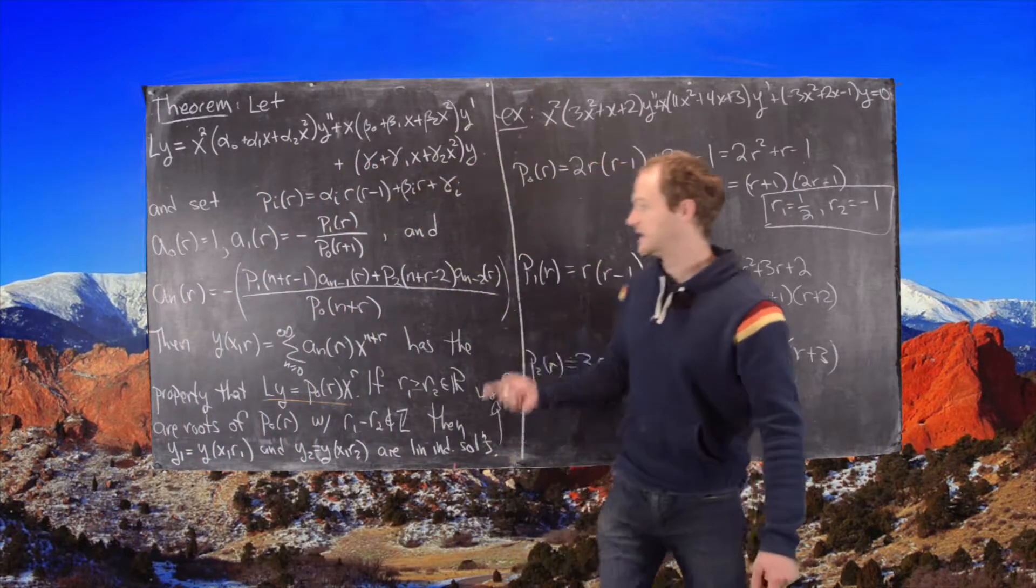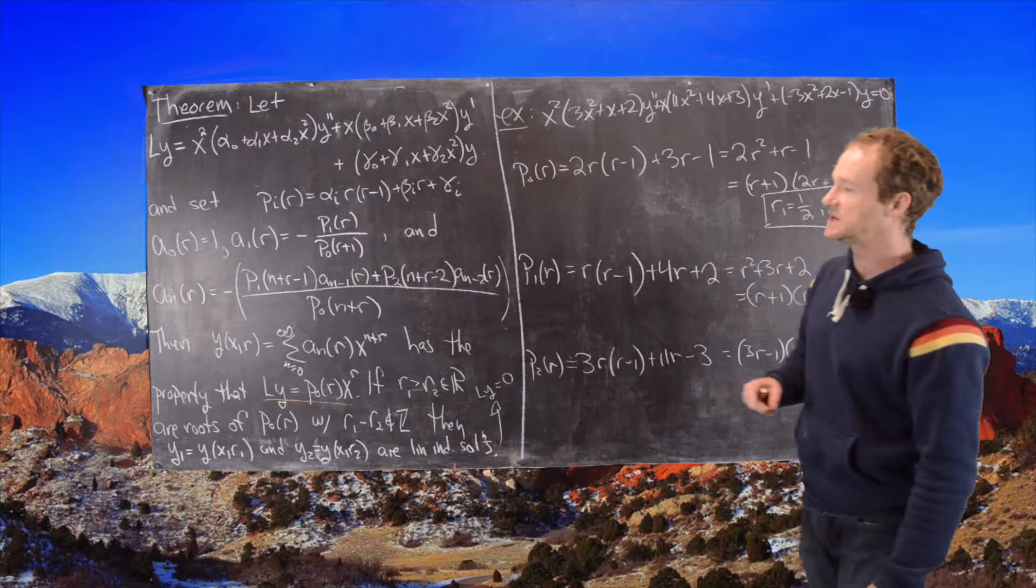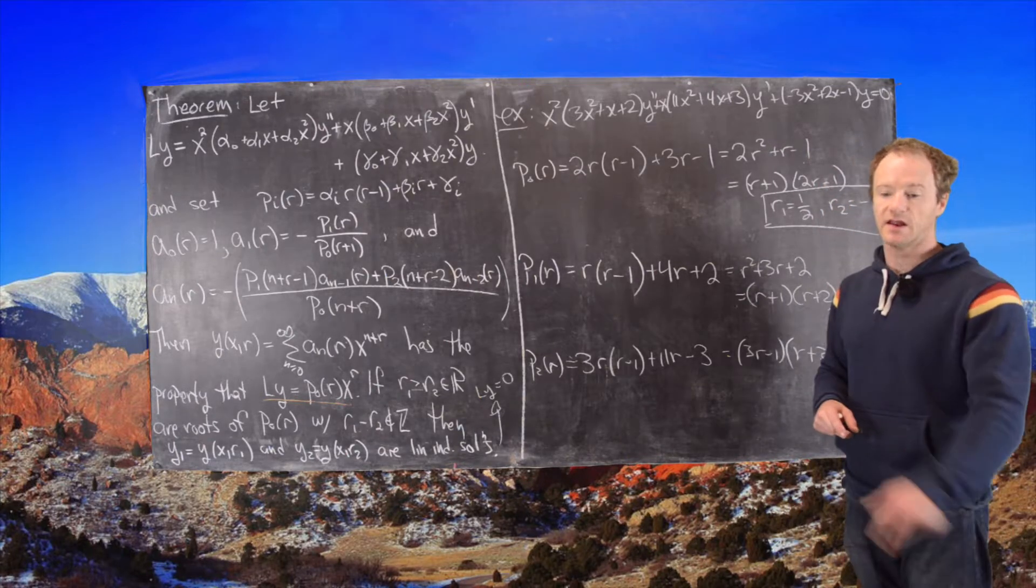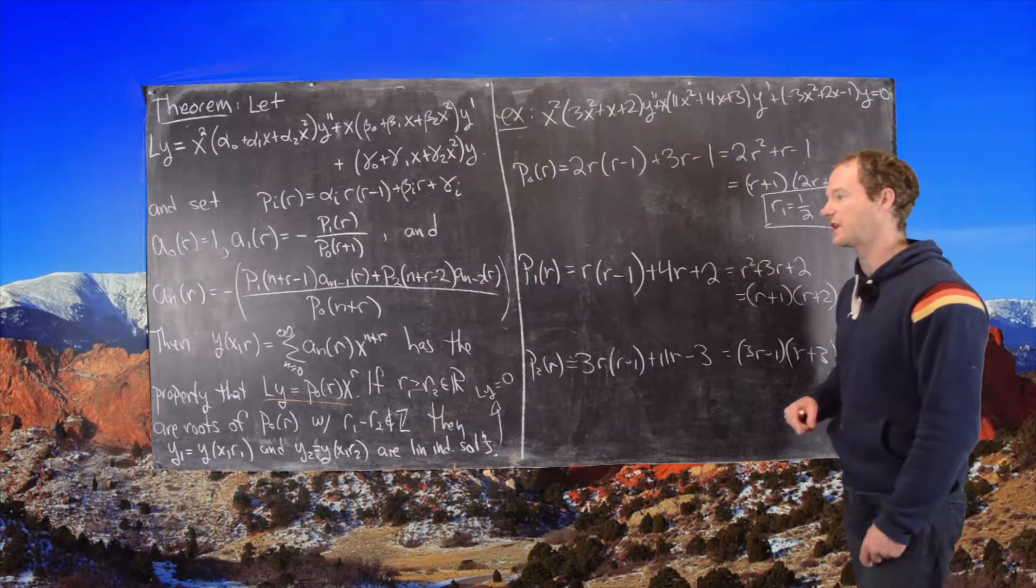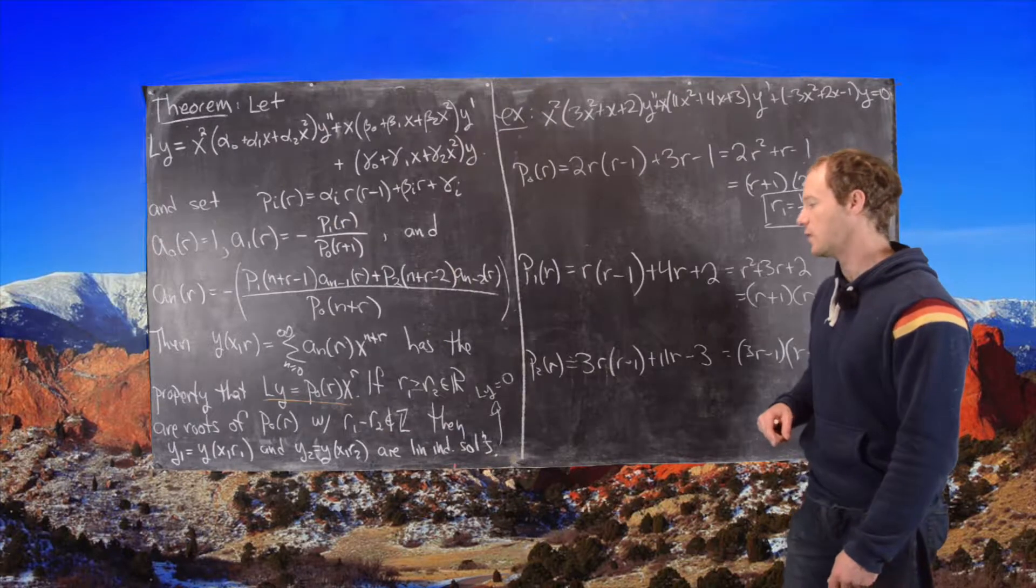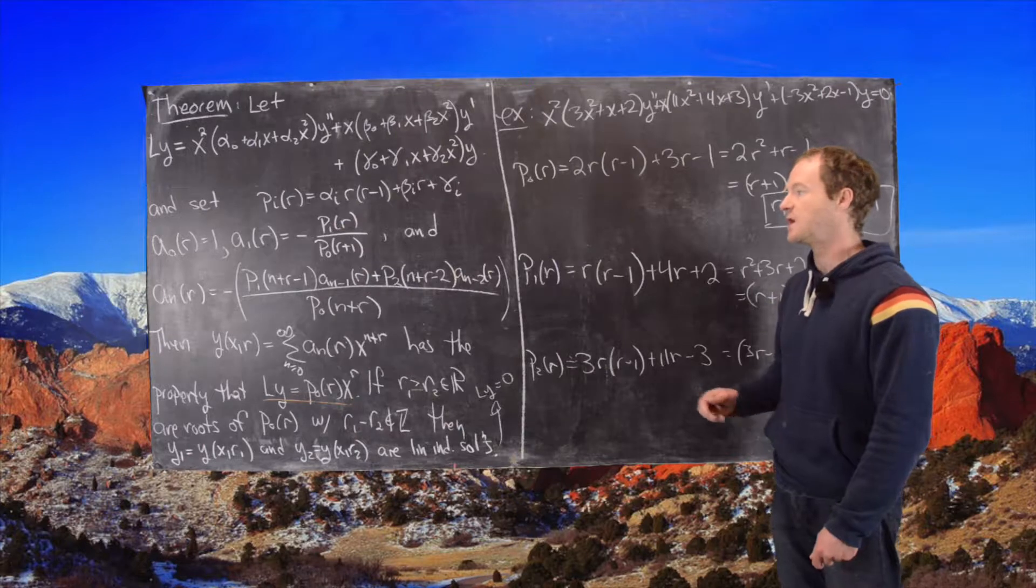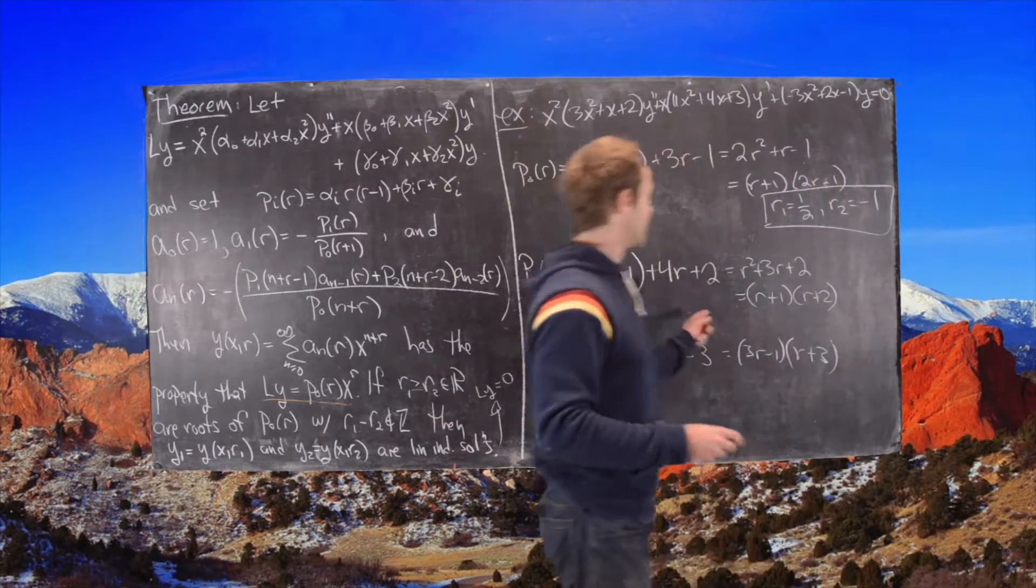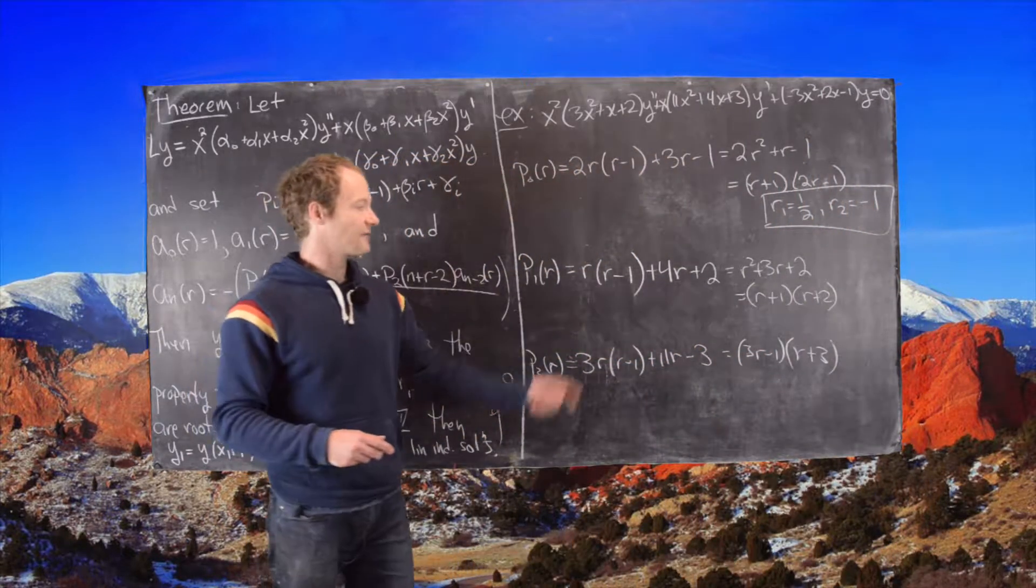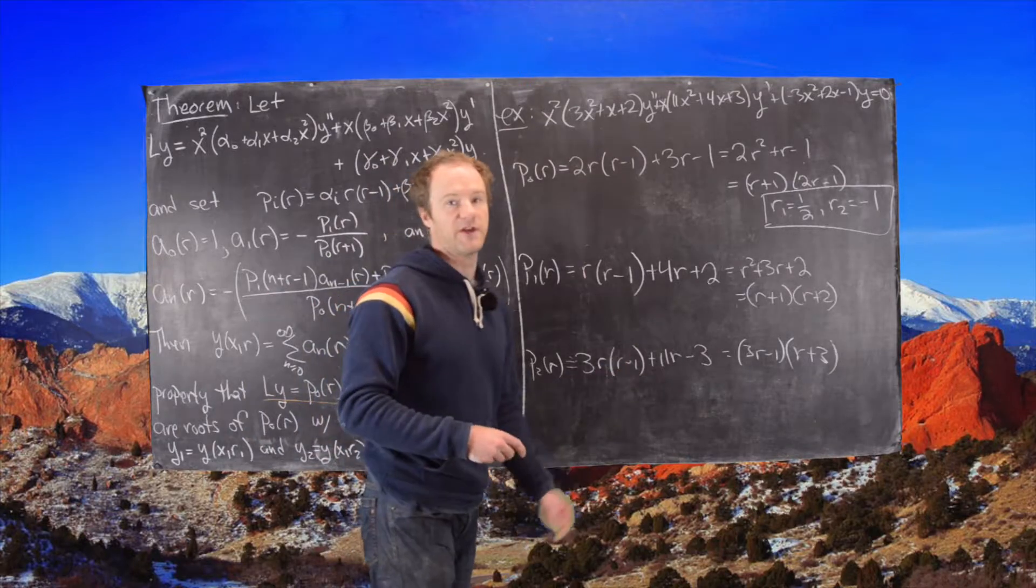So now what we need to do is stick our polynomials into this recursion and then come up with the coefficients. We won't be able to get a closed form in this case, but we will be able to get the first several coefficients of the solution and that's what we'll do. So I'll clean up this side of the board and after I clean up this side of the board we'll finish it off.